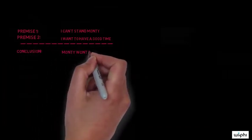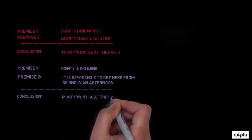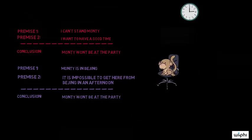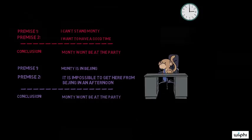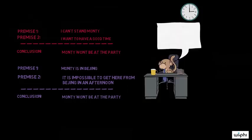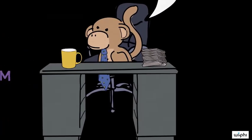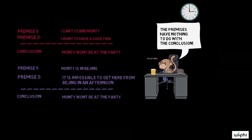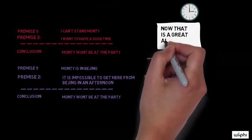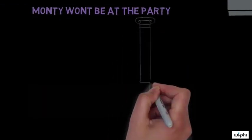The red argument is the first response she gave: two premises, I can't stand Monty and I want to have a good time, with the conclusion that Monty won't be at the party. The purple argument consisted also of two premises: Monty's in Beijing and he can't get from Beijing to the party in time, so he won't be at the party. The first argument is not good, while the purple argument is good. The red argument's premises don't make the conclusion any more likely to be true — the fact that your friend can't stand Monty and wants to have a good time is simply unrelated to the conclusion. In the purple argument, though, if the premises are true, they guarantee that the conclusion is true, so the premises do support the conclusion.